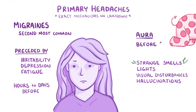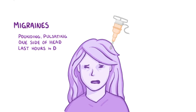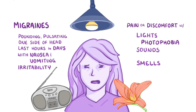The migraine itself usually feels like a pounding or pulsating, typically localized to one side of the head, and can last from hours to days. These headaches tend to come with nausea, vomiting, irritability, and discomfort with lights, sounds, and smells — called photophobia, phonophobia, and osmophobia, respectively.